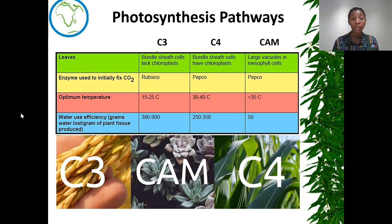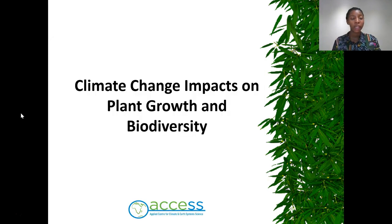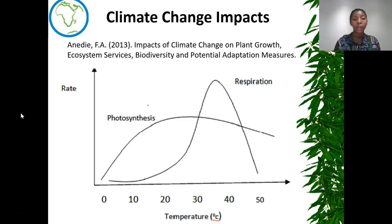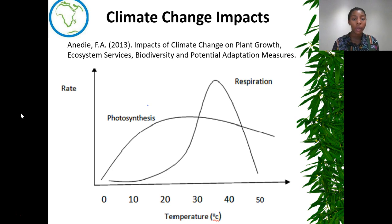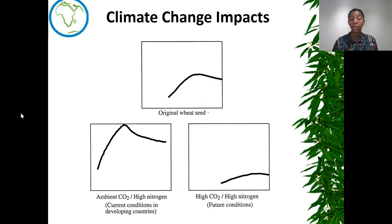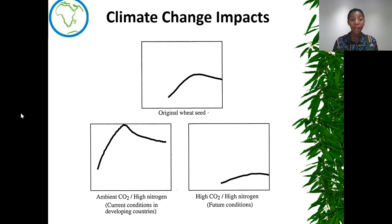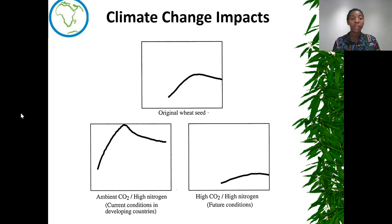Speaking of climate, a study found that rising temperature could actually affect the rate of photosynthesis and respiration — with rate on the y-axis and temperature on the x-axis. This study made an experiment with original wheat seeds to see how carbon dioxide affects plant growth. In the current condition, using ambient carbon dioxide and a high nitrogen concentration, there was growth. But with projected future conditions of high carbon dioxide and high nitrogen content, there was little to no growth.